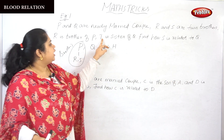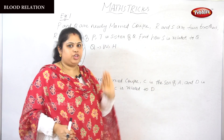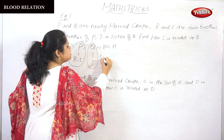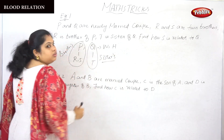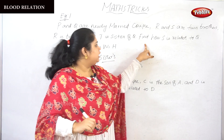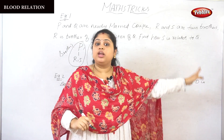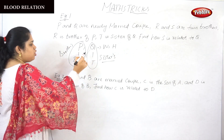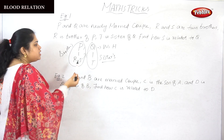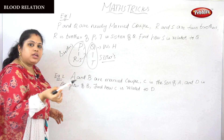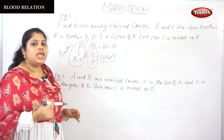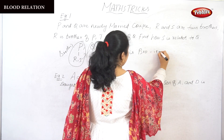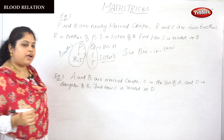T is sister of Q, so Q and T are sisters. Find how S is related to Q: Q's husband is P, and P's brother is S. So Q's husband's brother S means S is brother-in-law. S is brother-in-law of Q. This is how you want to find it out.